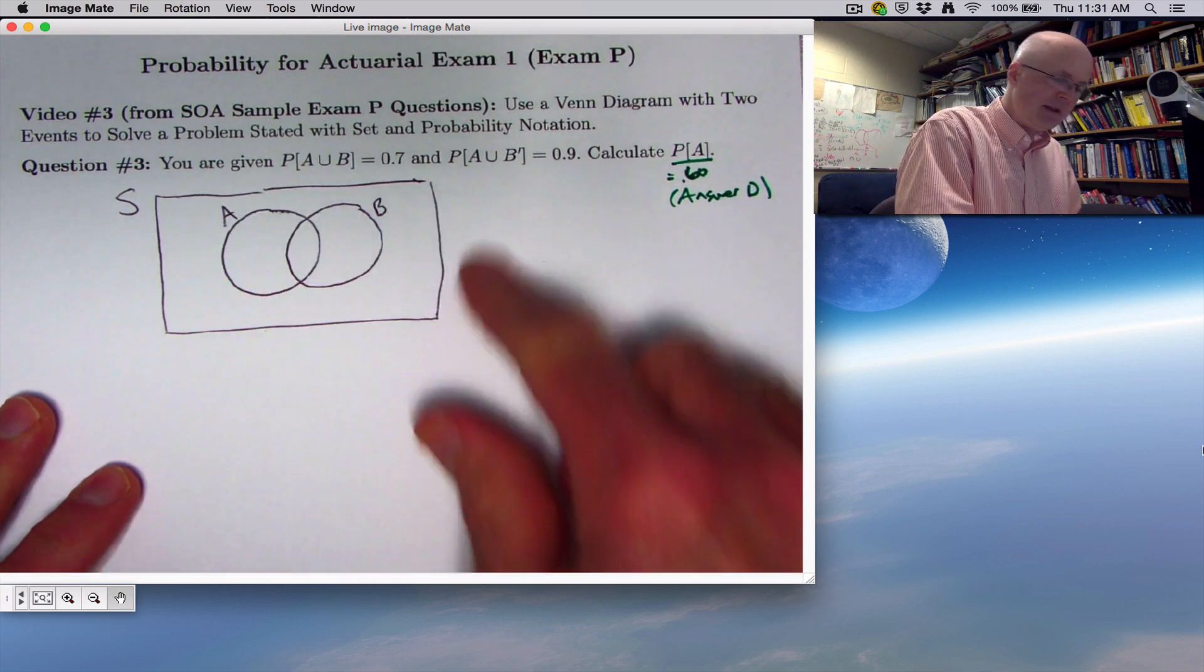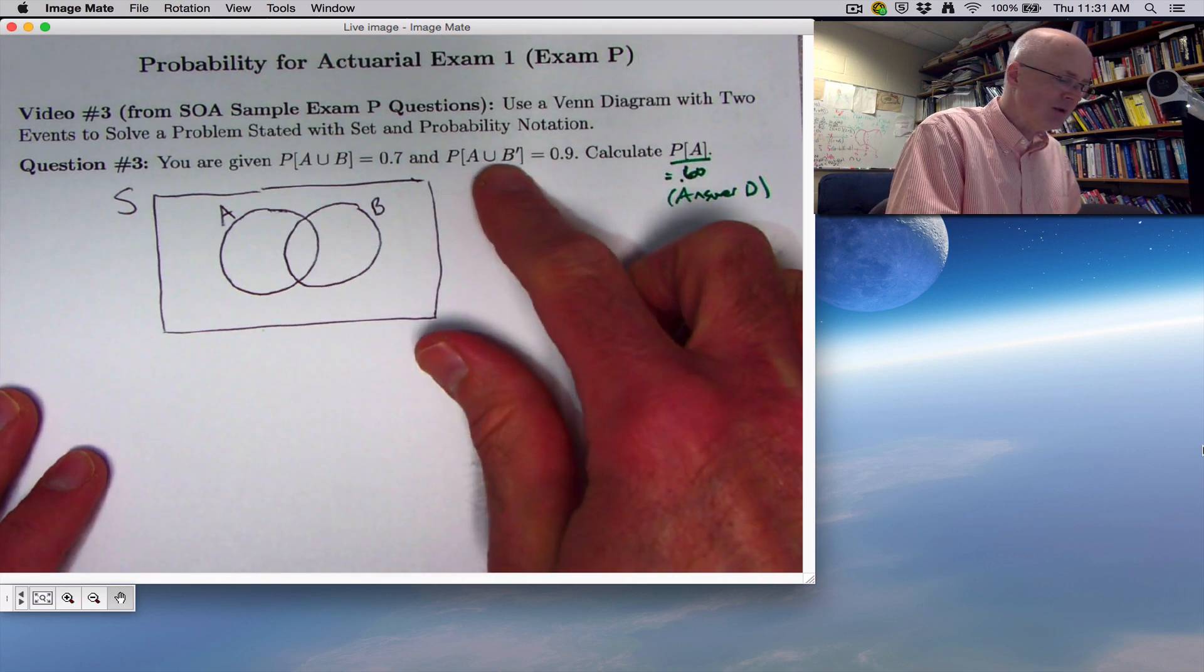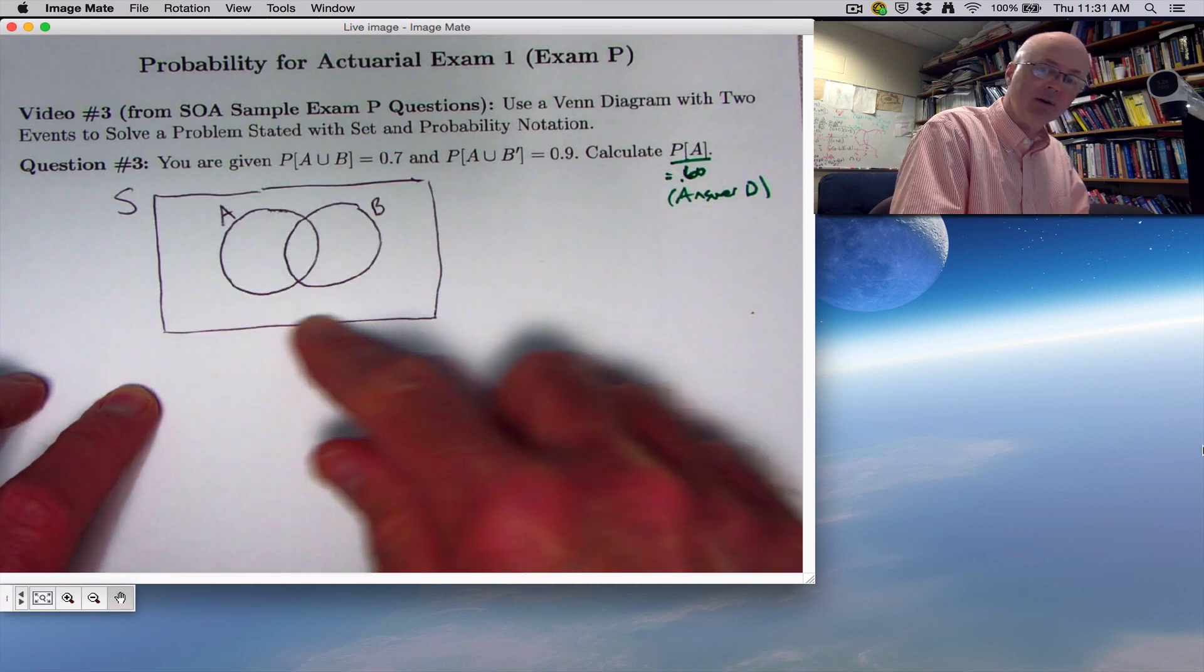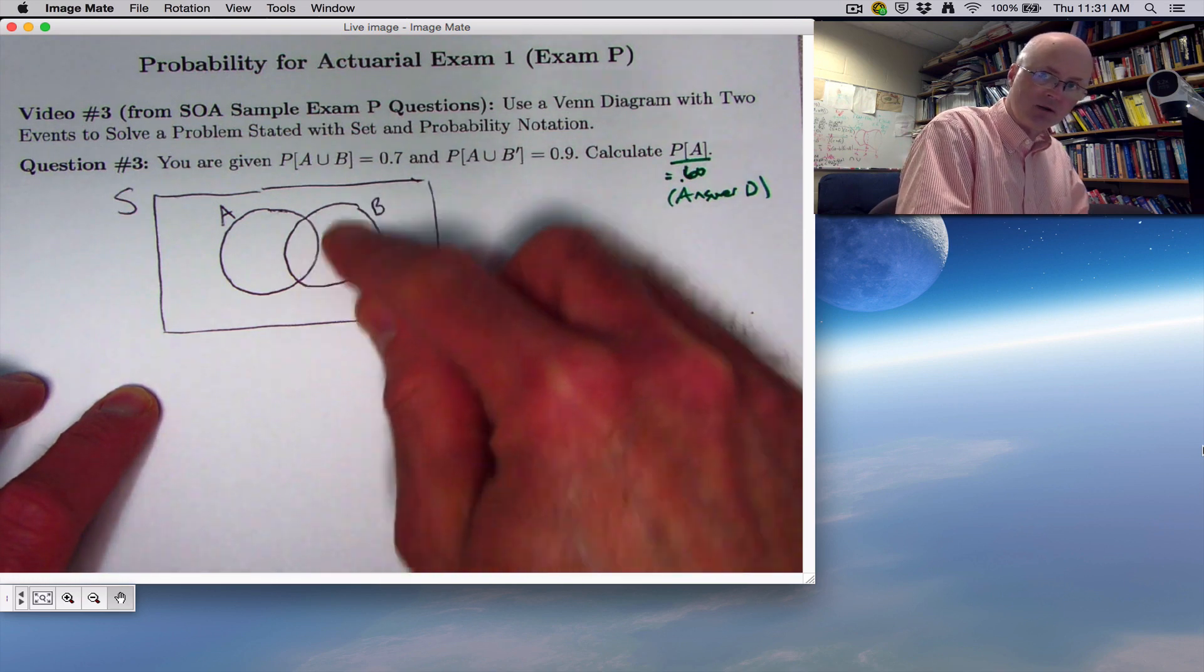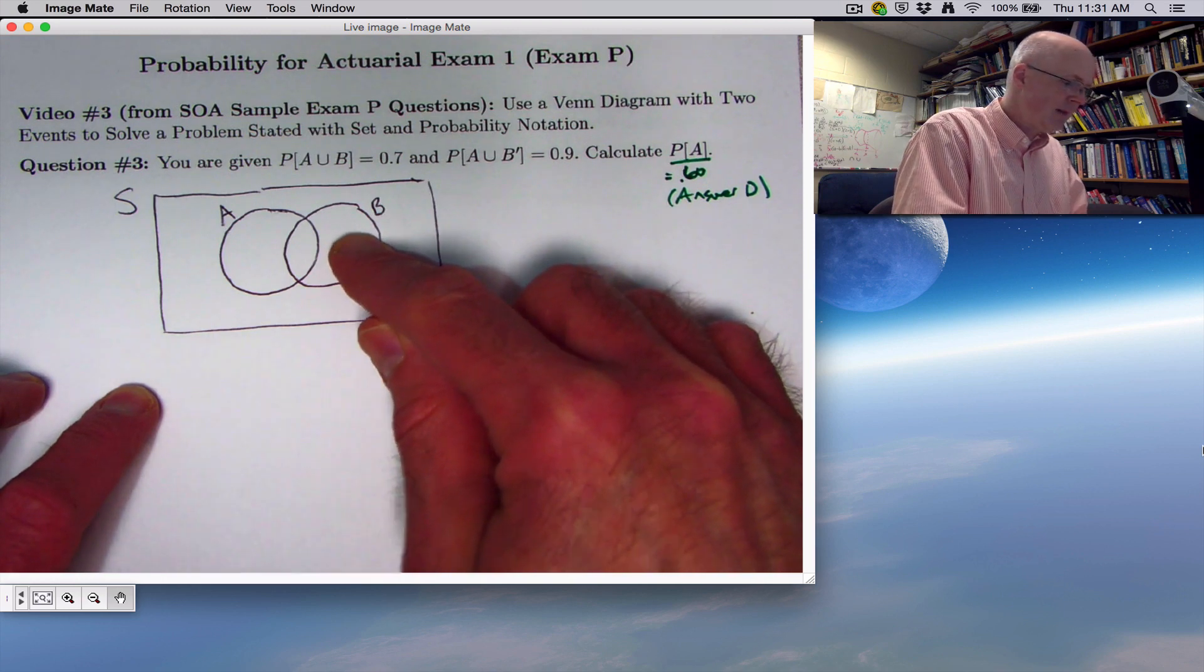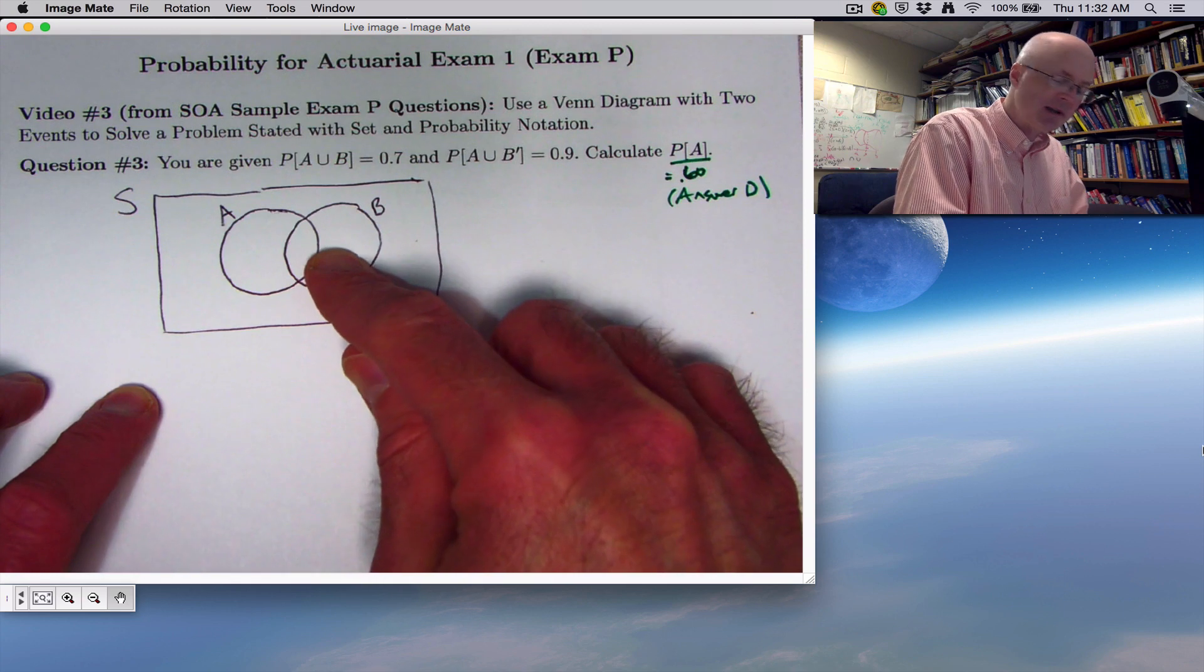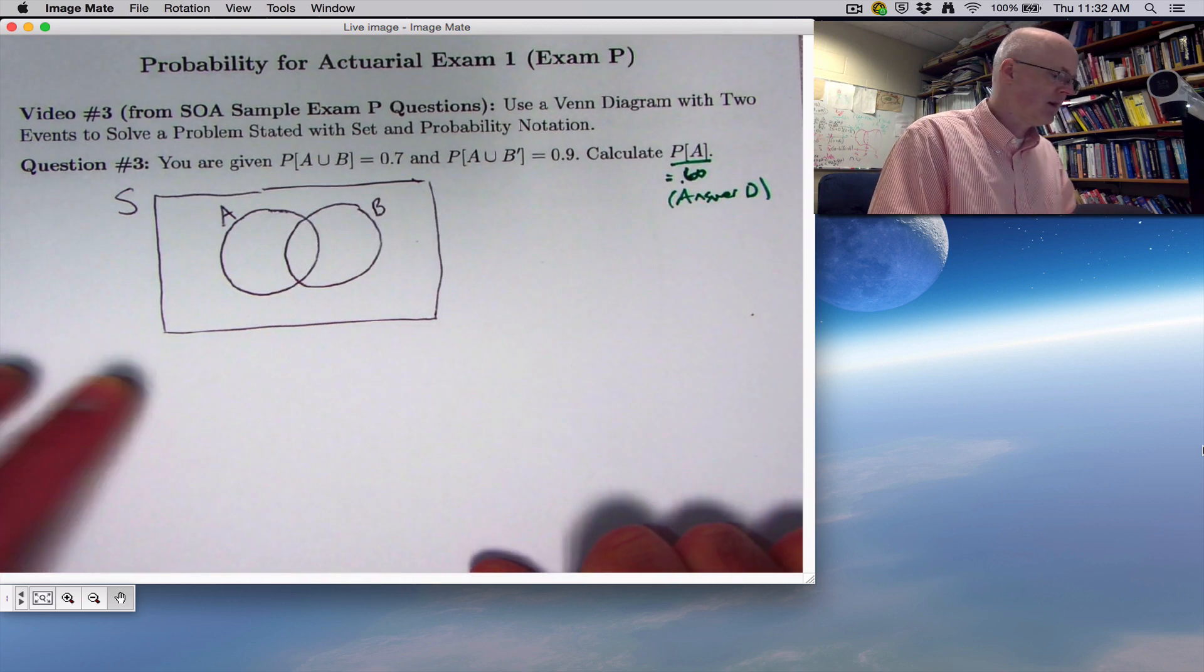Did you catch that? You can solve this pretty quickly with the help of this diagram by thinking carefully to understand what the notation means. Again, I'll do it again real quick. Think of the sample space itself as having probability of 1 or 100%. A union B prime, again, is everything in A, including also everything outside of B. So the only thing that's not included is this crescent shape. That's 90% of the probability, leaving 10% there. But A union B is 70% of the probability. So if you've got 10% here, you're left with 60% over there. This is 0.6.